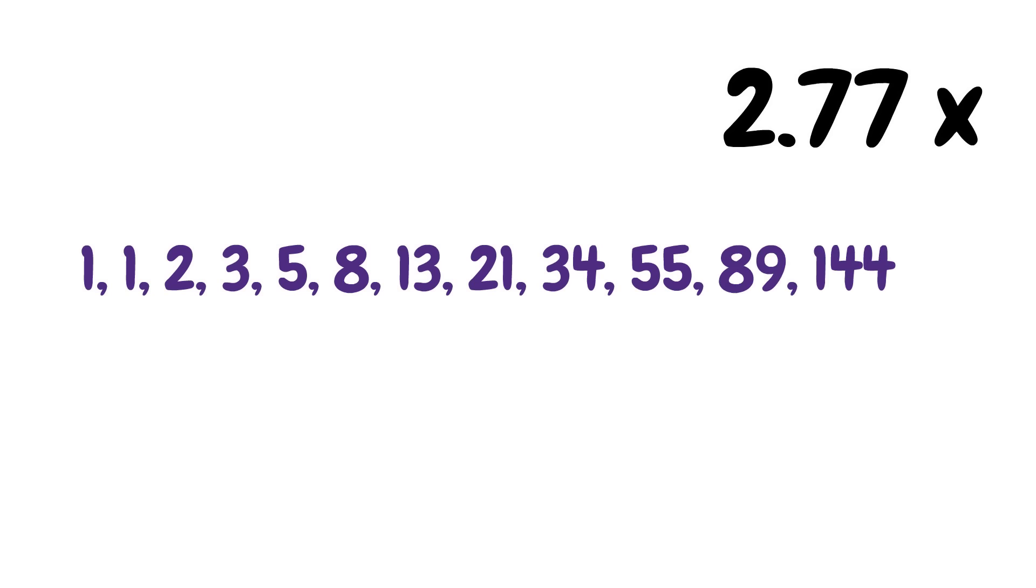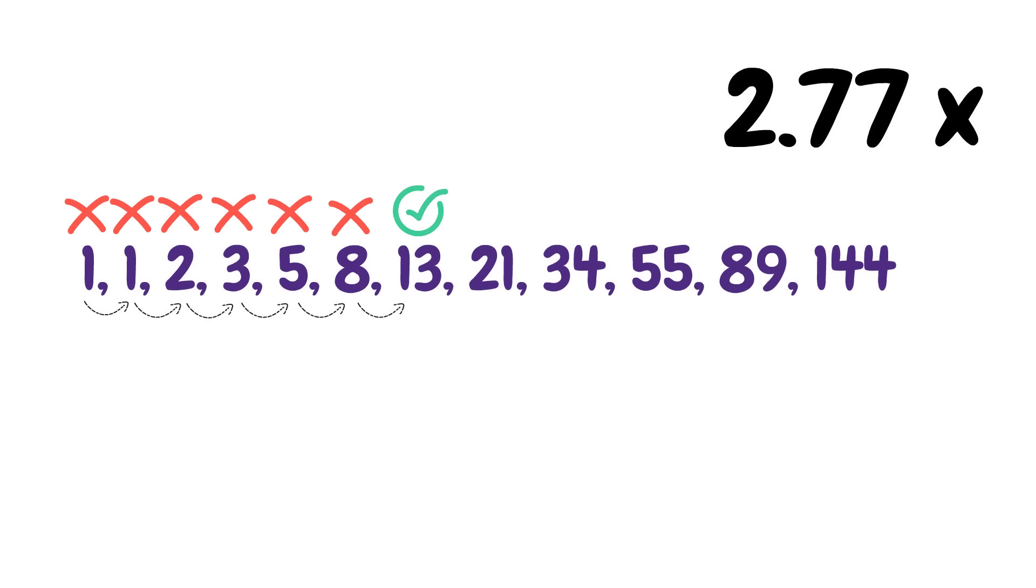For example purposes, let's assume we lose 6 bets and win our 7th bet. So we will have lost 1, 1, 2, 3, 5, 8, and then we win on the 7th progression, which is 13.